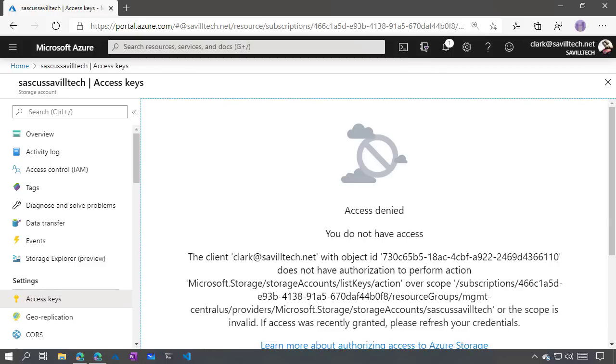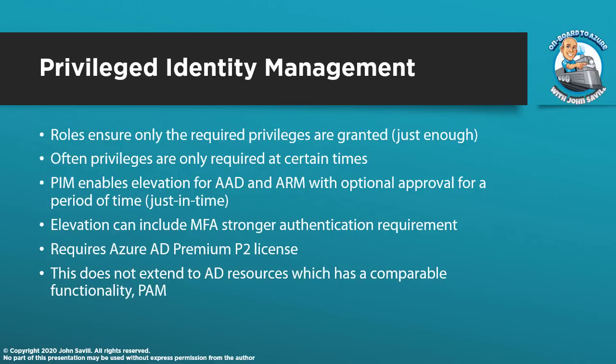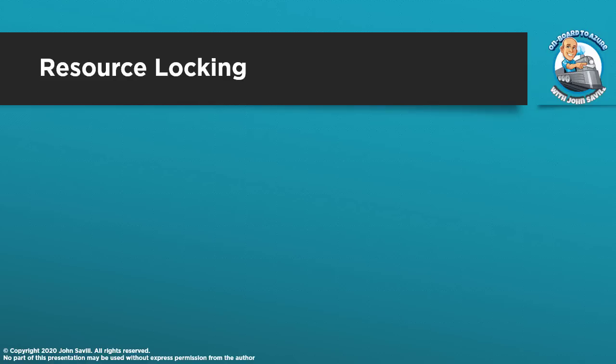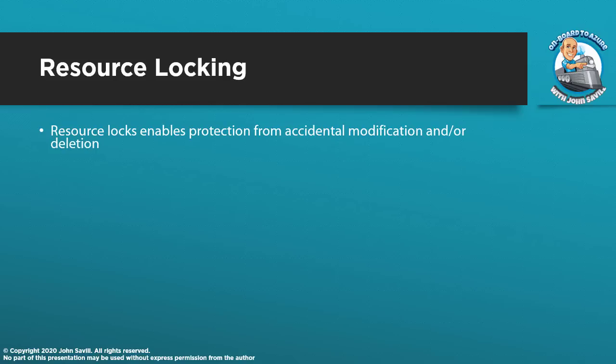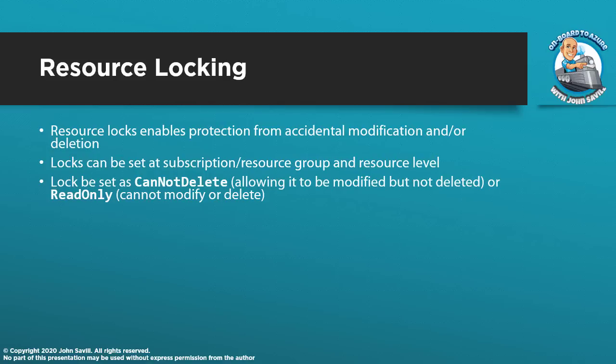I definitely recommend using PIM, especially if you have higher-level roles. If maybe you're an owner or contributor, think about using PIM rather than just walking around day-to-day with those permissions. Finally, we have resource locks. This is not role-based access control, but it enables me to protect resources from accidental modification and/or deletion. I can set locks at a subscription level, a resource group, or individual resource. Like everything else, they are inherited. I can set a lock as 'cannot delete' — this lets it be modified but not deleted — or 'read-only', meaning I can't change it or delete it.